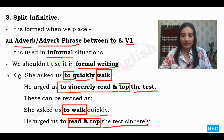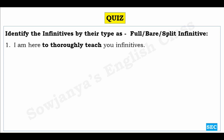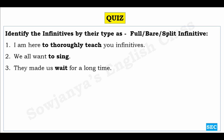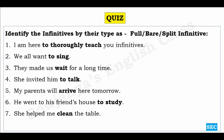Let us proceed to our quiz. Identify the infinitives by their type as full, bare, or split infinitive. Sentence 1: 'I am here to thoroughly teach you infinitives.' 2: 'We all want to sing.' 3: 'They made us wait for a long time.' 4: 'She invited him to talk.' 5: 'My parents will arrive here tomorrow.' 6: 'He went to his friend's house to study.' 7: 'She helped me clean the table.' 8: 'Our goal was to win.' Try to read them and identify the type.